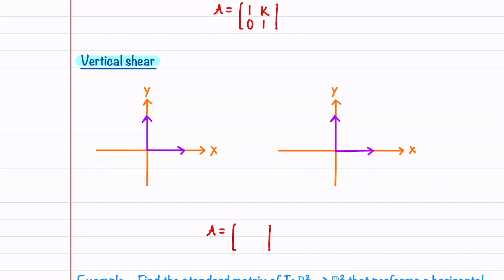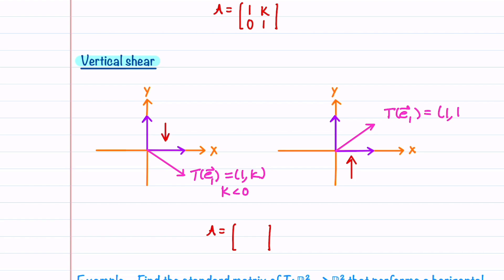For a vertical shear, we have a force applied perpendicular to the x-axis. E1 changes and E2 remains fixed. T of E1 can be written as (1, K), where K < 0 when a downward force is applied and K > 0 when an upward force is applied. Our standard matrix is then [[1, 0], [K, 1]].